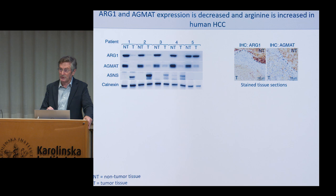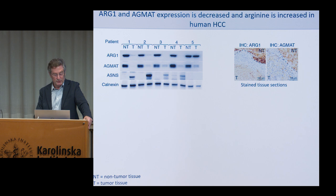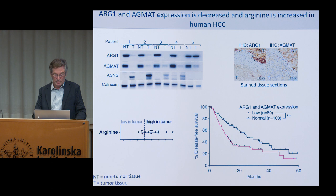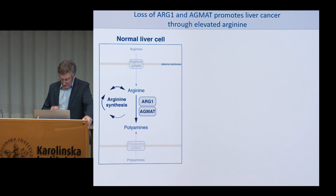We also asked whether this is relevant in human cancer. We looked at human tumor biopsies — tumor and non-tumor tissue from human patients — and again found what we found in mice: ARG1 and AgMet are lost in the tumor compared to non-tumor tissue, arginine levels are also high in tumors from patients, and low levels of ARG1 or AgMet correlated with low survival in these patients. So what we see in the mice we think is also relevant to humans.